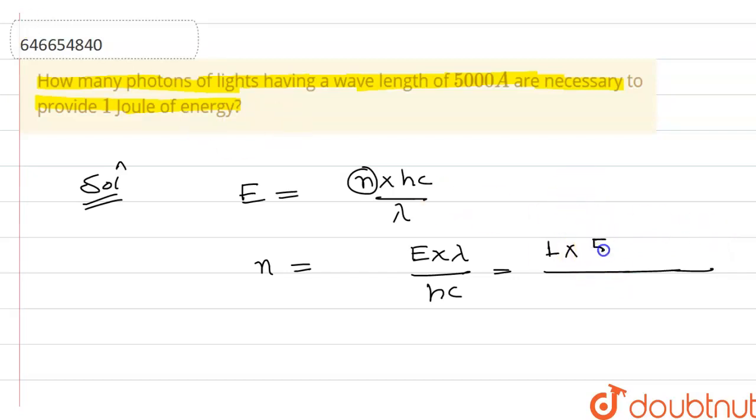Lambda is 5000 times 10 to the power minus 10 meters, divided by h which is 6.6 times 10 to the power minus 34, times c which is 3 times 10 to the power 8 meters per second. When you multiply and divide, the value comes out to be 2.5 times 10 to the power 18 photons.